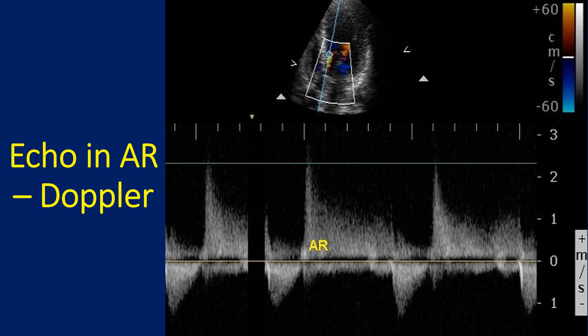The forward velocity is approximately 1.2 m/s, indicating the absence of any associated aortic stenosis. The color bar on the top left indicates that the Nyquist limit of the color Doppler imaging has been set at 60 cm/s. The scale on the lower left is the Doppler scale in m/s, with positive values above and negative values below the baseline. In the apical 5-chamber view, aortic forward flow is away from the transducer and depicted as negative, while the regurgitant flow towards the transducer is depicted as positive.